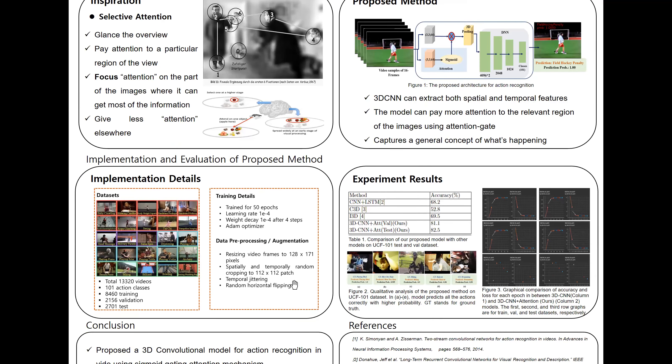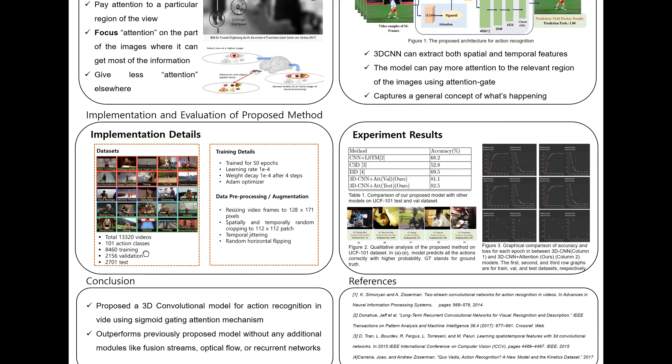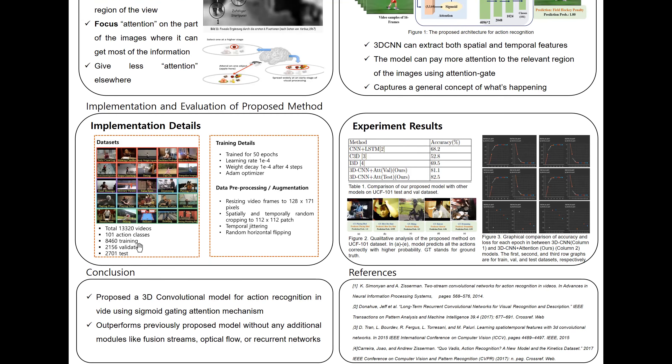These are the implementation details of our proposed model. We use UCF 101 to train our model. UCF gives large diversity in terms of action and with the presence of large variants in camera motion, object appearance and pose, object scale, viewpoint, cluttered background, etc. And the datasets are further divided into training, test, and validation sets to perform evaluation.